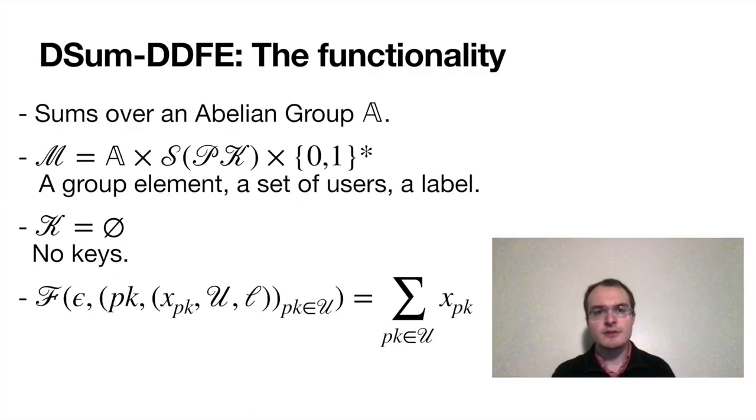At a high level, decentralized sum is about computing sums. Or to be accurate, repeated group operations in finite abelian groups. In practice, the group will often be that of modular integers. So our messages will contain a group element that we want to aggregate with other people's group elements. We need to specify the set of people we want to aggregate with, and we'll want to agree on a label. In practice, this is something that might be set to the date, so that if we want to aggregate different data later on, an attacker can't come in and mix and match our data from the different aggregations to learn more than they should.